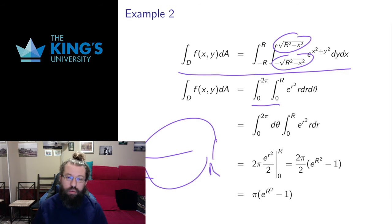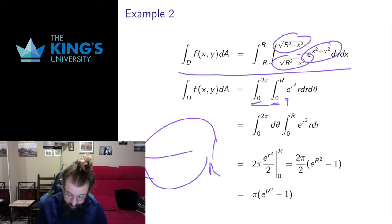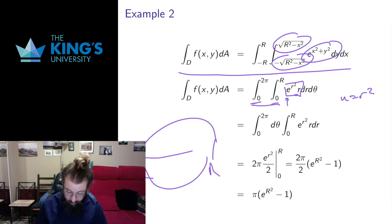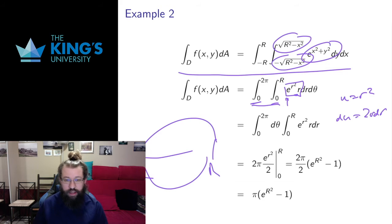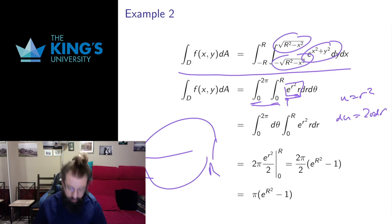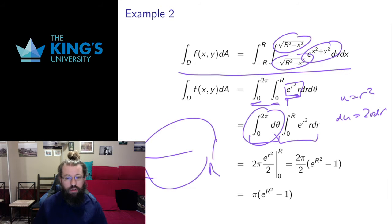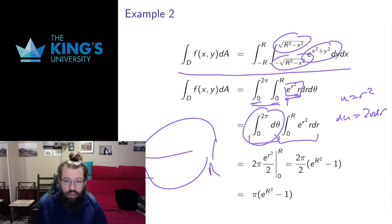If I set it up in polar coordinates, things are really quite lovely. I have a simpler integrand, constant bounds from 0 to 2 pi in angle and 0 to R in radius. Importantly, the Cartesian form has no antiderivative, whereas with the Jacobian term this becomes lovely — I can use a substitution u equals r squared with du equals 2r dr. Also, this integrand has no angle term at all, so it's separable, meaning I can split it into two single-variable integrals done independently.